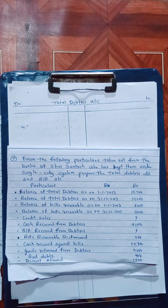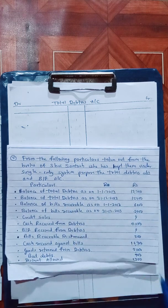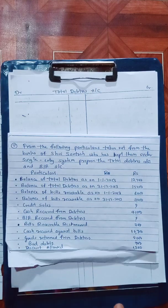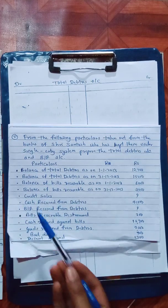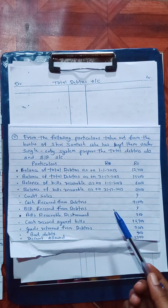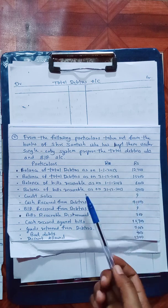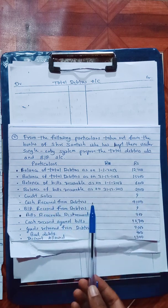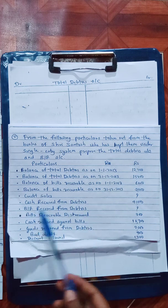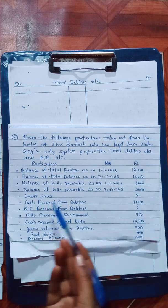The next items are: bills receivable opening balance and closing balance. Then credit sales — question mark, meaning credit sales is a missing item we need to find out. Next is cash received from debtors, and we need to find out the missing items. Credit sales is missing, and we need to find that out.